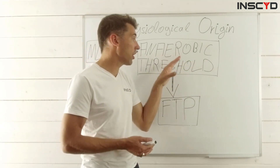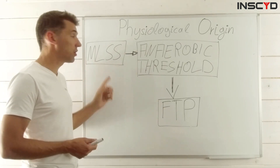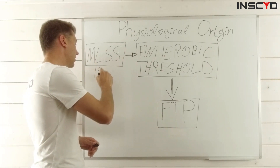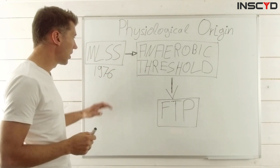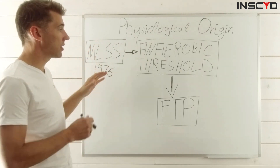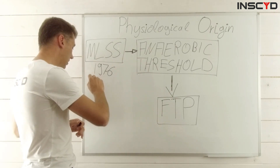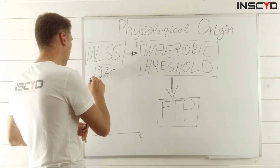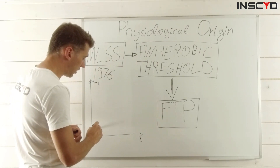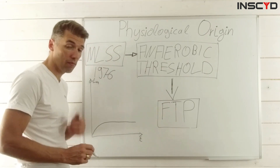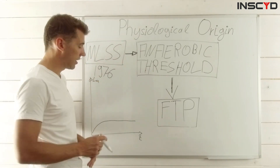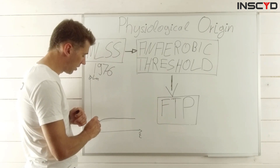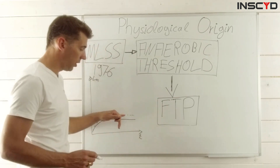The real origin — where it all comes from — is a term called MLSS, which stands for maximum lactate steady state. Back in the mid-70s of the last century, around 1976, the first publications came out describing that at a certain exercise intensity, the lactate concentration would be stable. Over time, and at a certain intensity, the lactate concentration in the blood, measured at the earlobe or finger, would stabilize. When you increase intensity, the lactate might still stabilize, but on a higher level.